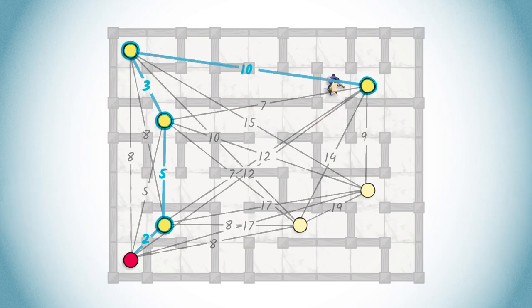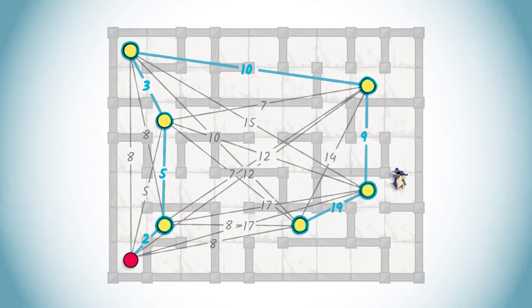Once the two players have chosen their strategies, the game can be entirely known and the winner can be identified by letting the game play out. A play can be seen as a walk in the arena depending on the two chosen strategies. In the next lesson, Patrick will show you how to compute good strategies.